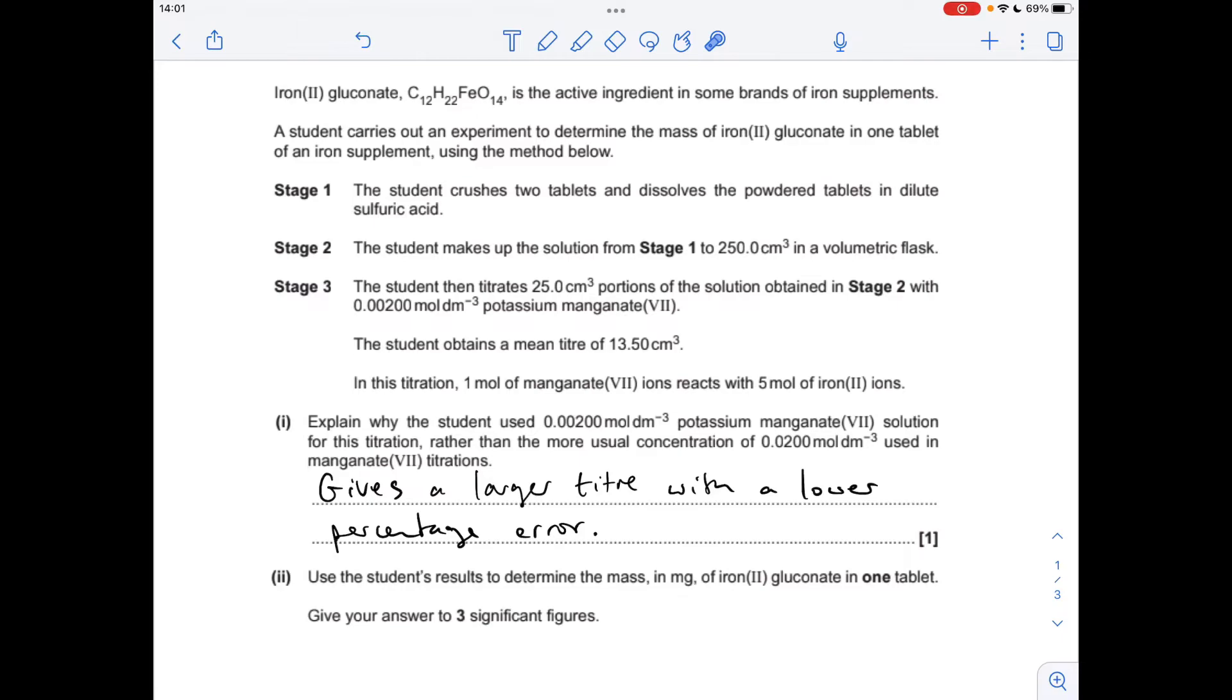So if they'd used the normal concentration they would have only got a titre of 1.35 centimeters cubed and that would have had a very large percentage error in the answer. So by using a lower concentration of the potassium manganate 7 they've got a larger titre and that would have a lower percentage error in it.